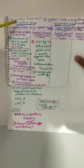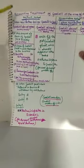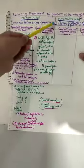Good morning students. Let's continue the topic of accounting treatment of goodwill at the time of admission of a new partner. As in the previous video, I discussed the premium method with you. To recapitulate: when the new partner brings the amount of goodwill in cash, it is known as the premium method.